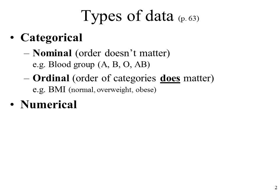Another type of categorical data is ordinal. Here, the order of the categories does matter. For instance, for body mass index (BMI), the categories normal, overweight, and obese represent steady increases in the body mass index.